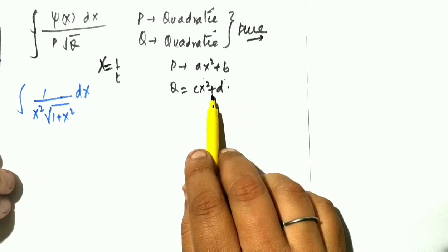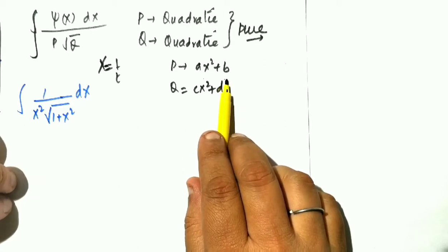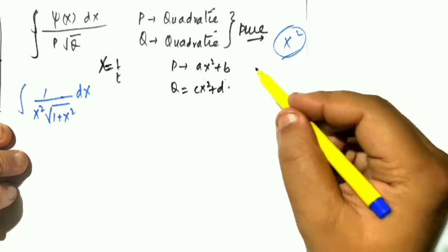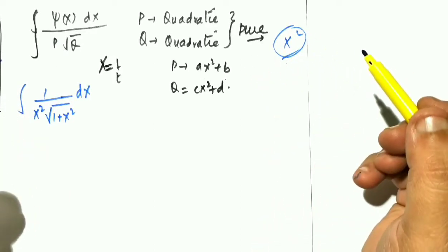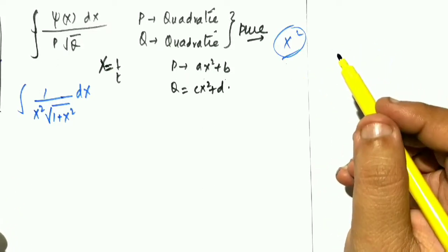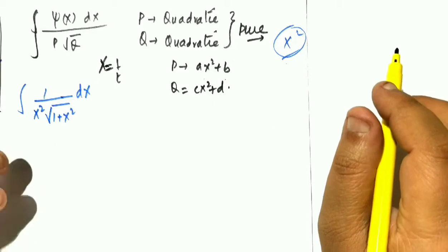This means that the coefficient of x is 0. That's why it is called a pure quadratic, or x square also can be used as a pure quadratic. But the coefficient of x must be 0 here. So this type of integral, how do we handle?